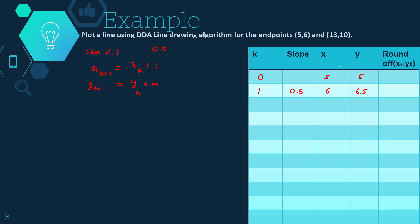Now for K=1, we find the slope between (6, 6.5) and the endpoint (13, 10). Using the slope formula: 10 minus 6.5 divided by 13 minus 6, which is 3.5 divided by 7, which is again 0.5. Since the slope is still less than 1, we increment X by 1 to get 7, and add slope 0.5 to Y: 6.5 + 0.5 = 7. So the next point is (7, 7).